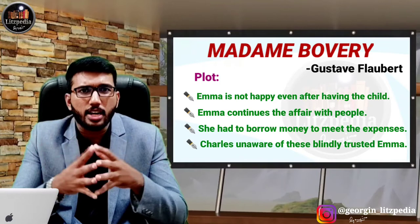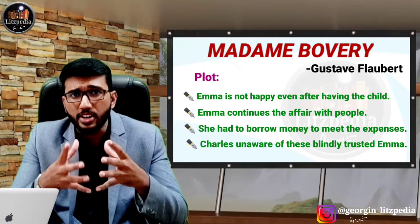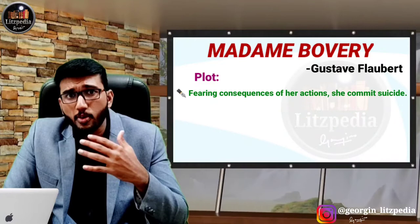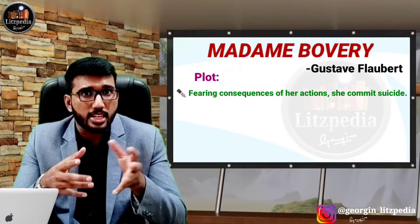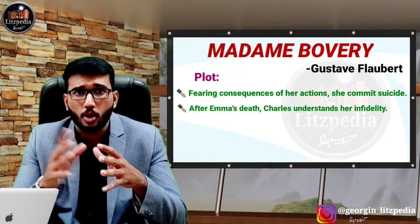Because of the heavy debts and fearing how she will repay them, Emma commits suicide. Charles Bovary at first thinks the love Emma had for him was very true, but later he comes to know it was not. Charles Bovary then also dies. Only their daughter remains, and in this tragic situation the novel ends.